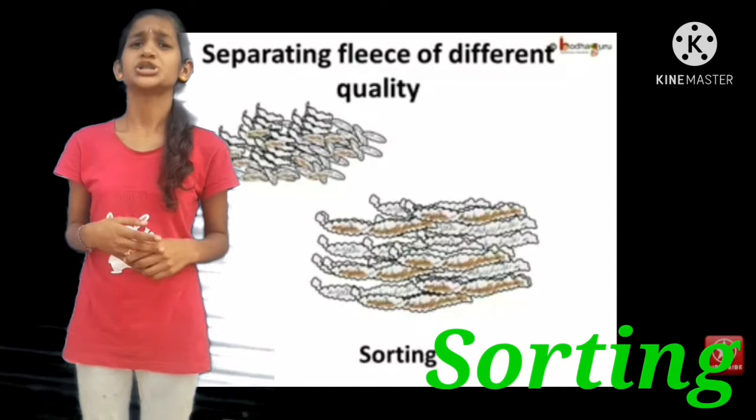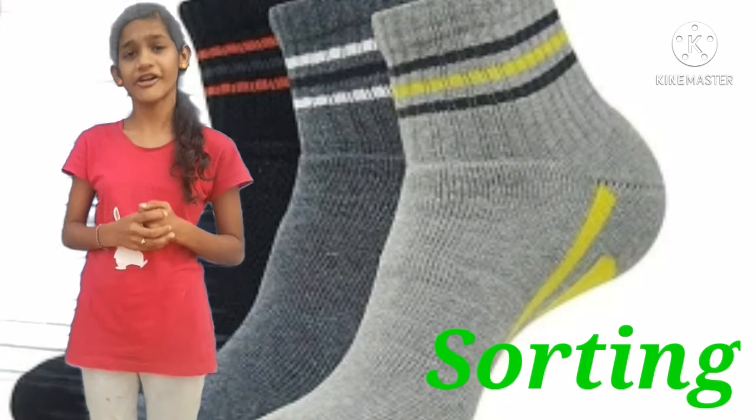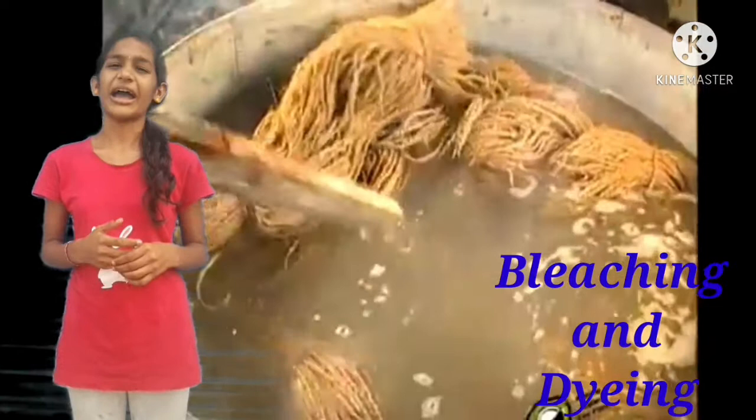The third step is sorting. Sorting means the separation of long and short fibers. Short fibers are used to make socks, and long fibers are used to make sweaters and shawls.